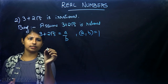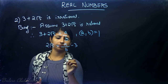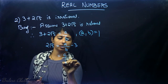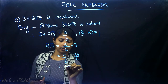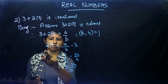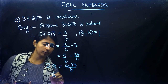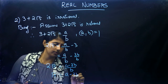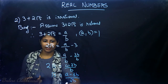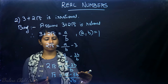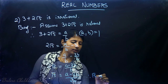Rearranging: 2√5 = a/b − 3 = (a − 3b)/b. Therefore √5 = (a − 3b)/(2b), which is a rational number, since a and b are integers with b ≠ 0. So √5 is expressed in the form p/q, meaning √5 is rational.